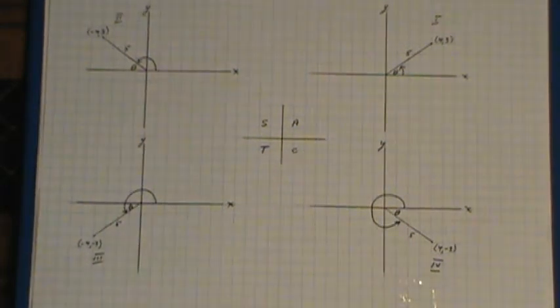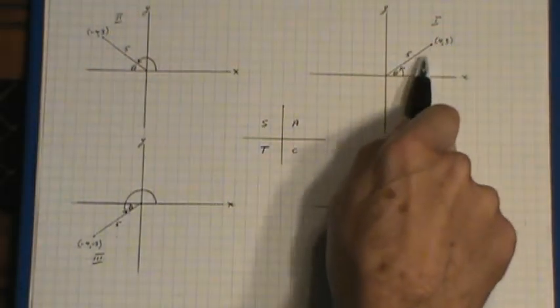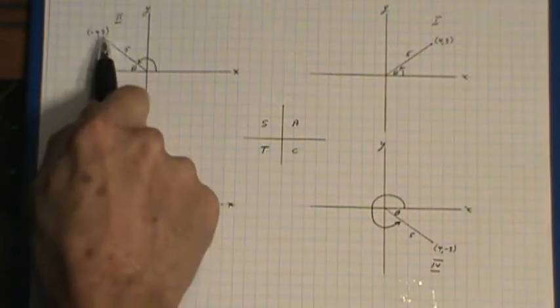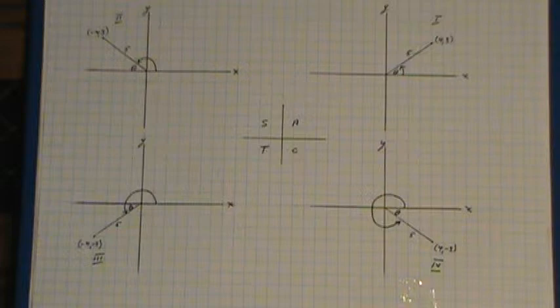And using the definitions that we've given you, sine being y over r, you notice that the sine value is positive in the first quadrant. It's also positive, 3 over 5, in the second quadrant.